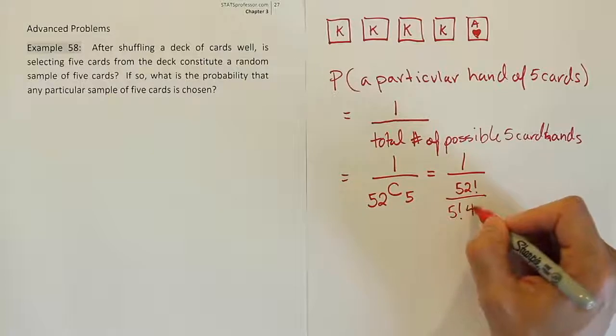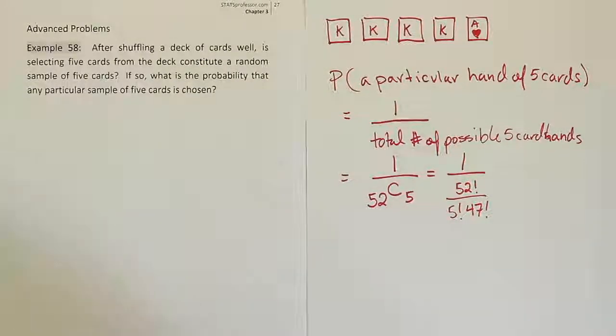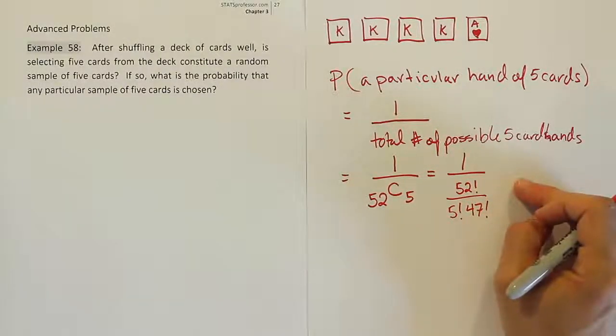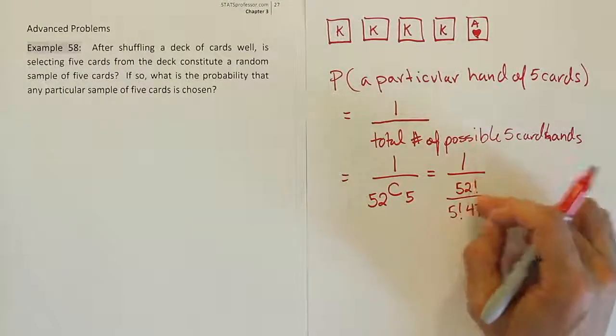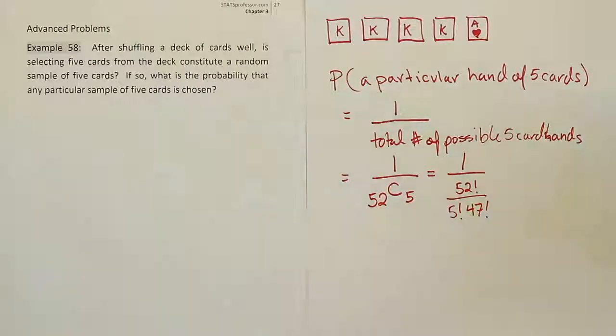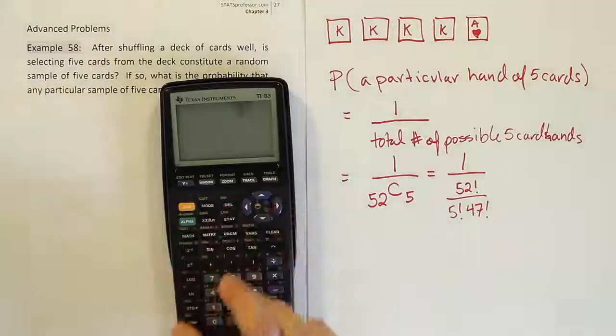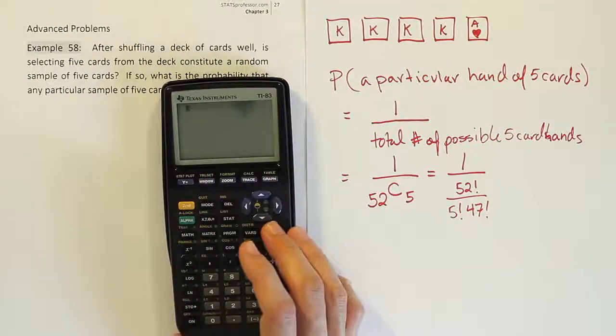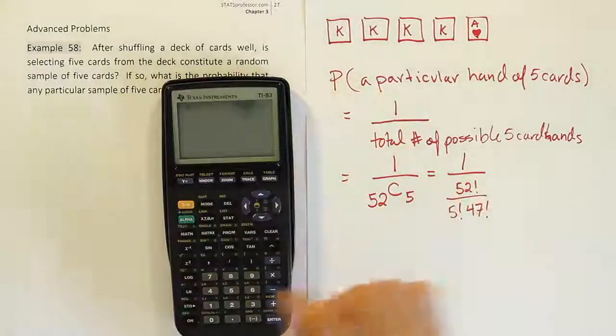And then remember, we'd count this one down till it got to 47 factorial. Then we'd cancel those out and then we would clean up and simplify. I'm just going to let our calculator do it because it's just so much faster. So let's do that with the calculator. So pulling up the calculator, we'll have just for the denominator, we're going to do 52.